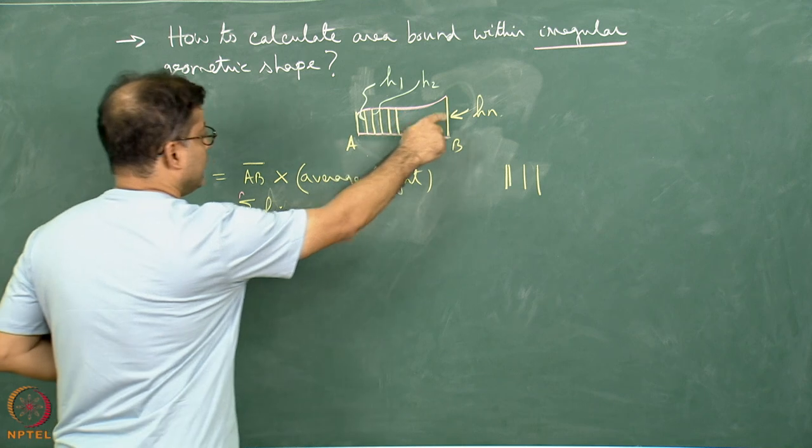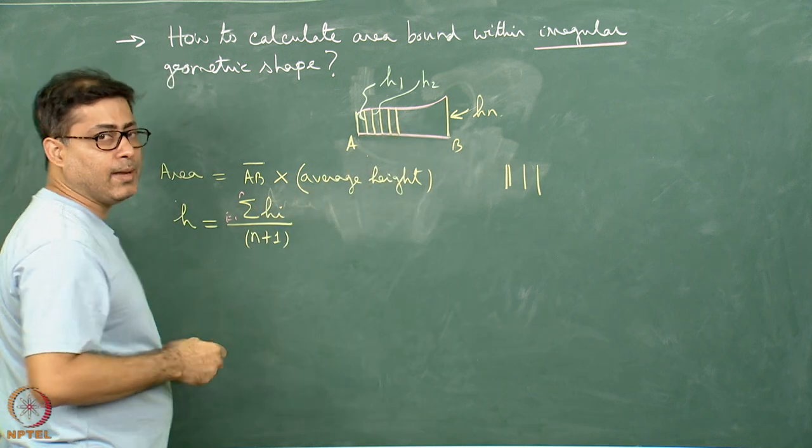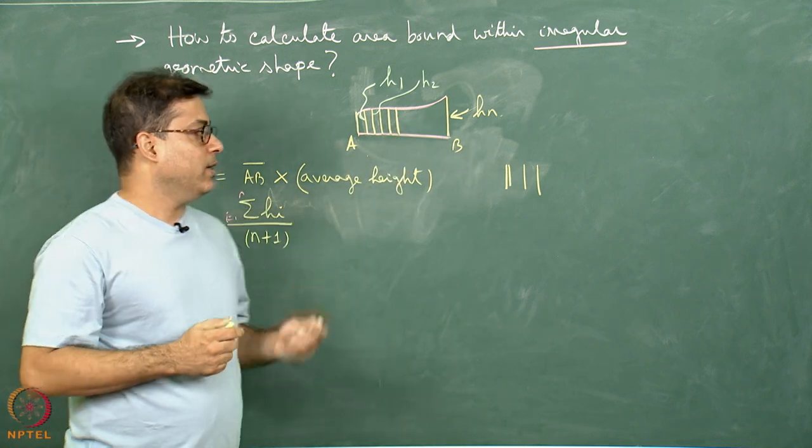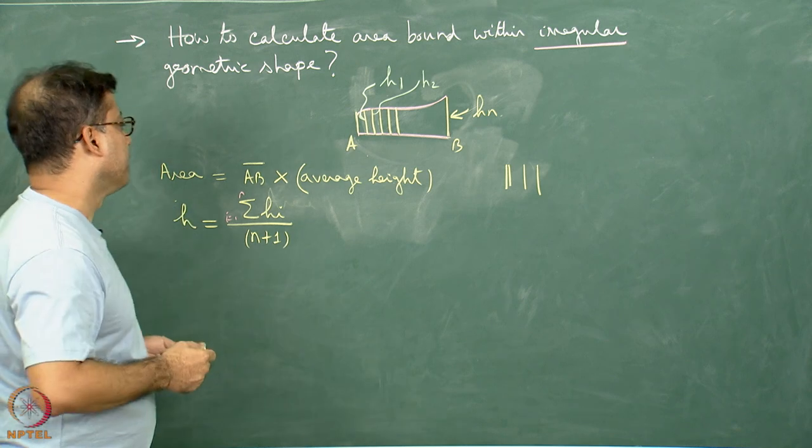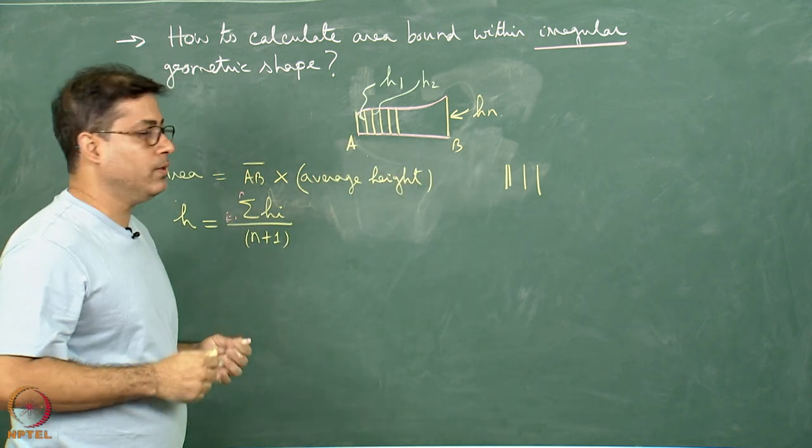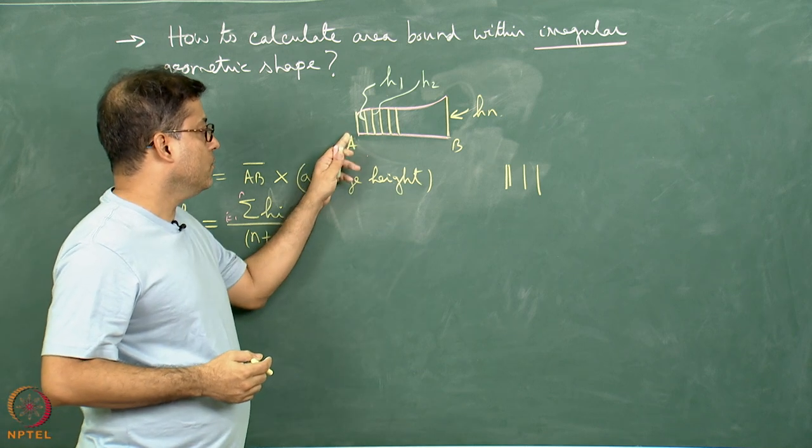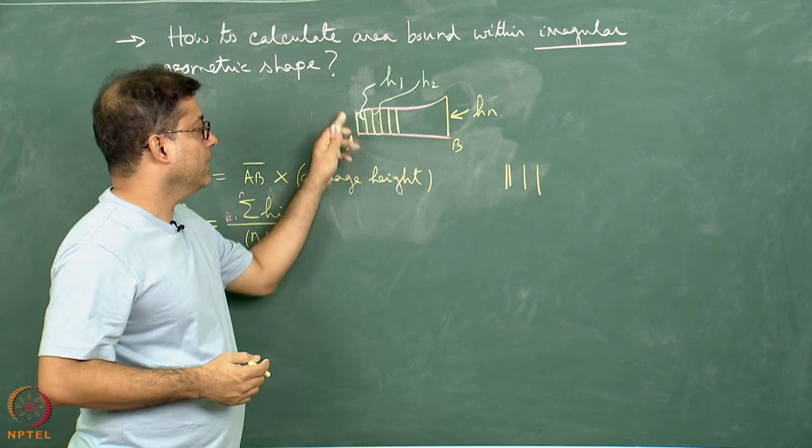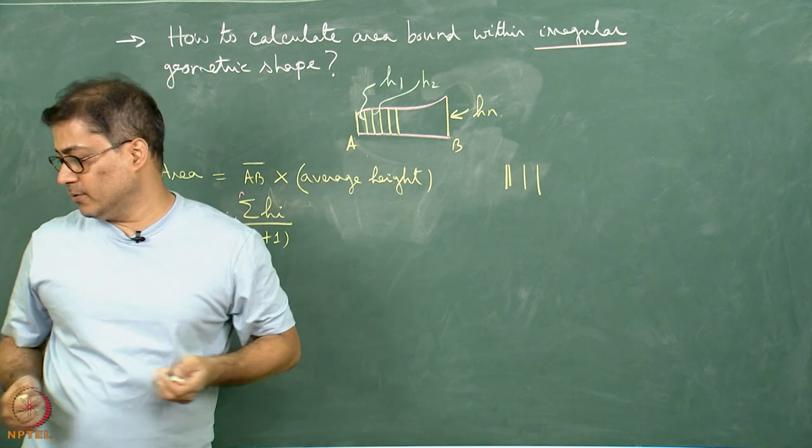This can be called as the average height or the representative height. So the area of this irregular object will be this. It is an approximate formula, but it is workable. This was a situation when AB line was horizontal.